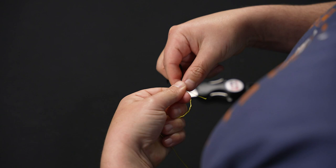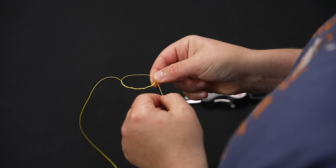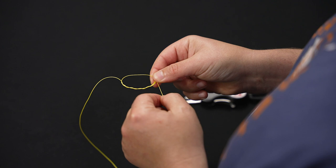So now once you've done that step now you've created another loop. So with that bigger loop you want to run the tag end back through this bigger loop and hang on to that tag end.